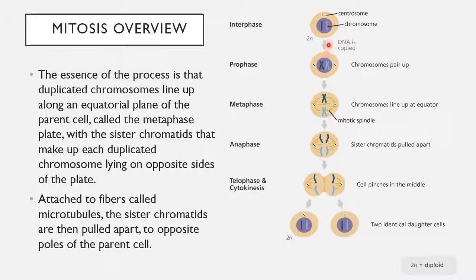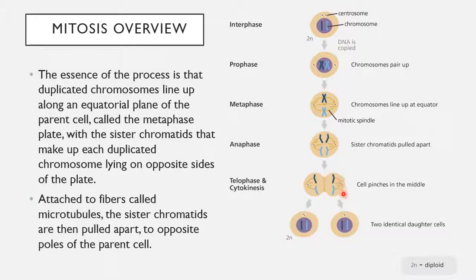The chromosomes line up at the center of the cell. One sister chromatid is on one half of the cell and the other sister chromatid is on the other half — this is metaphase, where everything lines up at the center. Anaphase is where the sister chromatids get pulled apart and move towards opposite sides of the cell. In telophase, the cell begins to pinch in the middle, and then in cytokinesis the cell completely splits into two identical new cells that are the exact same as the parent cell.